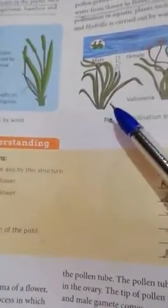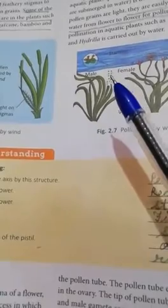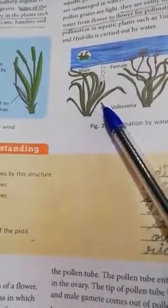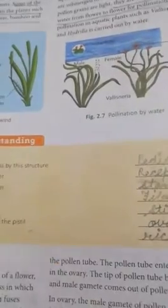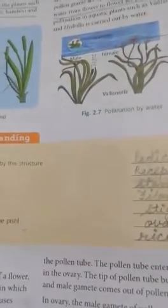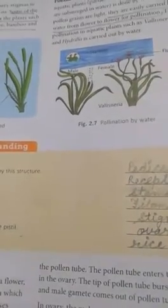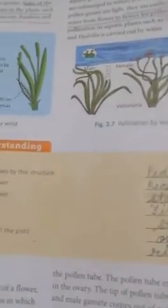So now, today we have studied about the pollination. Type of pollination, two type of the pollination, self pollination and cross pollination. Then we study about the agents of the pollination and basically we studied about insect pollination, water pollination and wind pollination. Now come down.